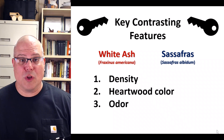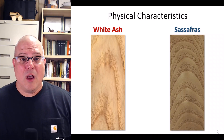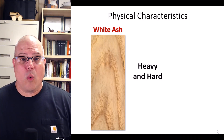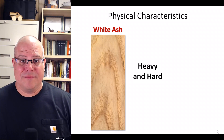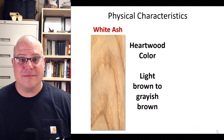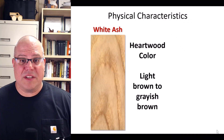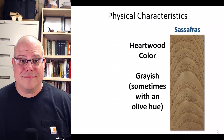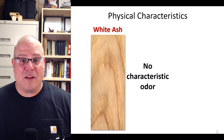Now let's take a closer look, starting with some contrasting physical characteristics. White ash is heavy and hard, while sassafras is much lighter and softer. The heartwood of ash is light brown or grayish brown, while the heartwood of sassafras is grayish in color, sometimes with an olive hue.